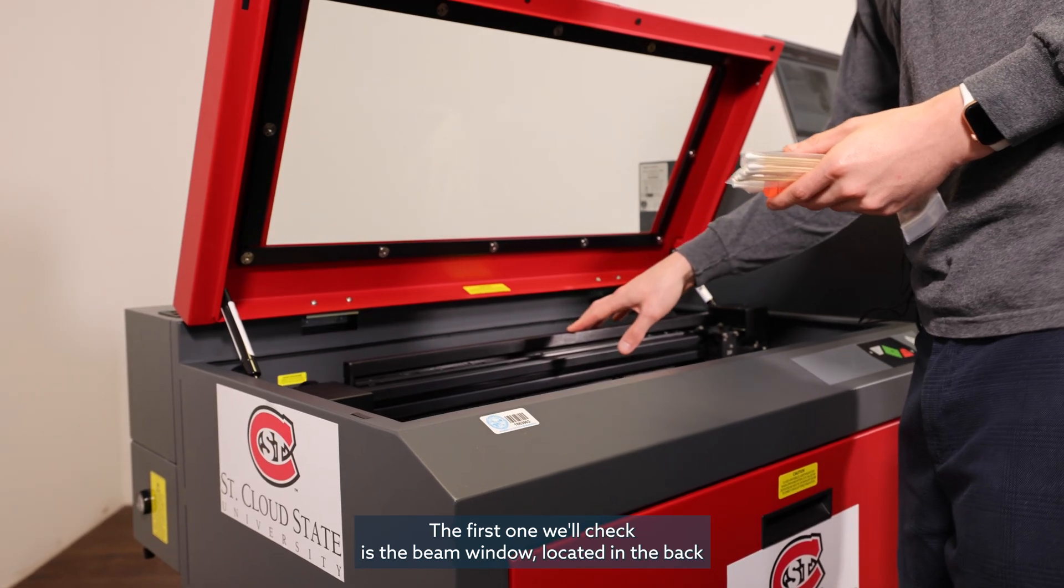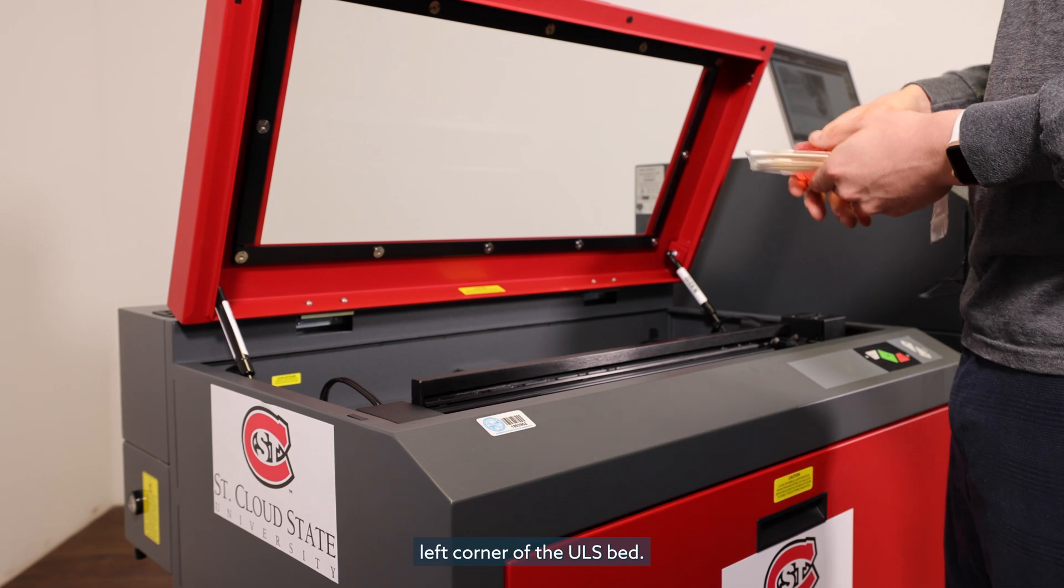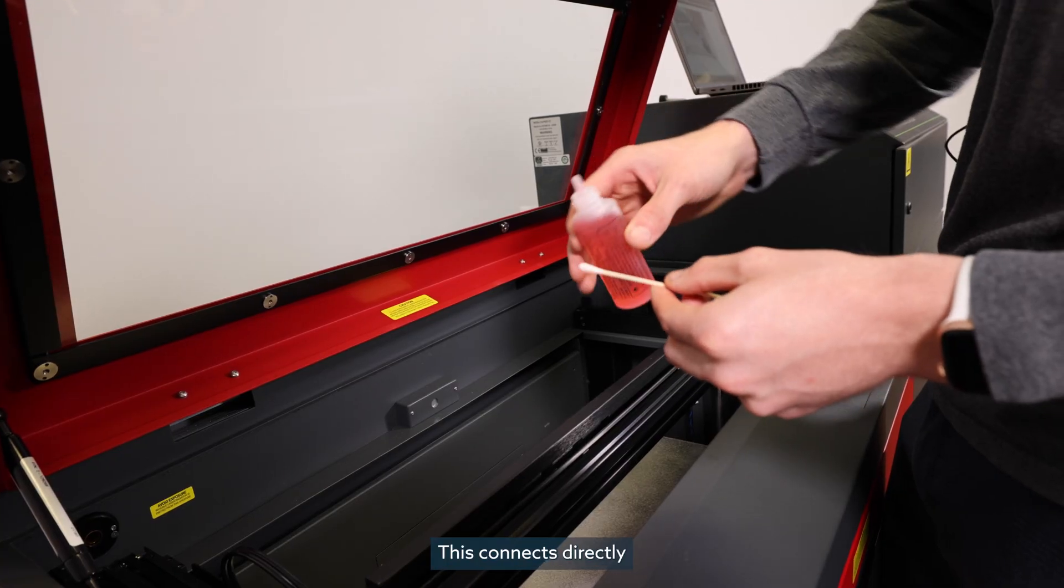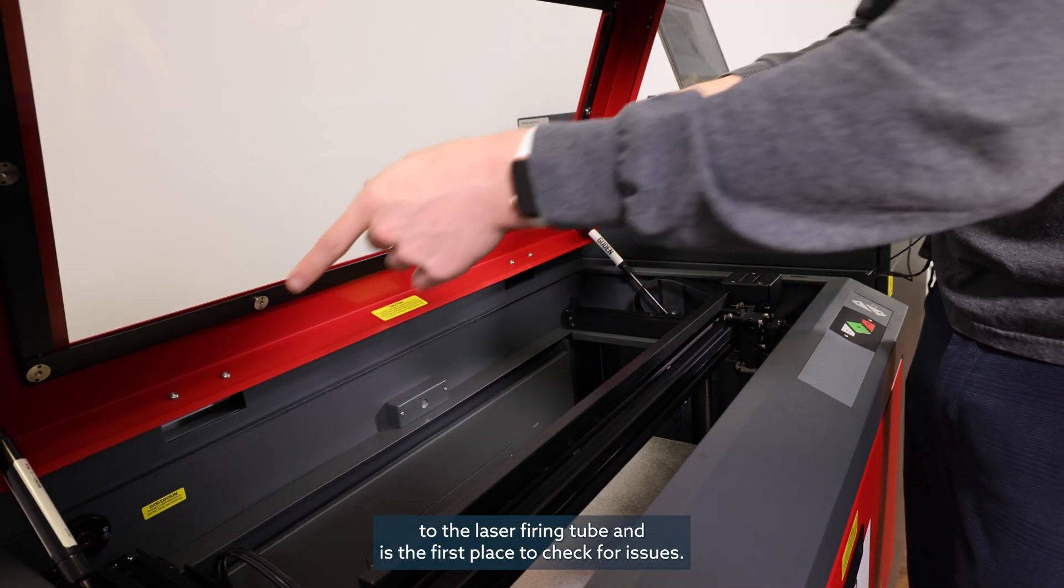The first one we'll check is the beam window located in the back left corner of the ULS bed. This connects directly to the laser firing tube and is the first place to check for issues.